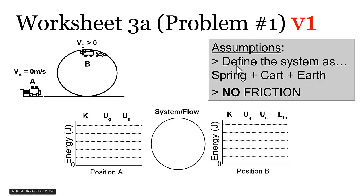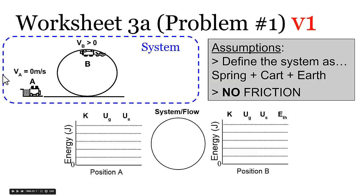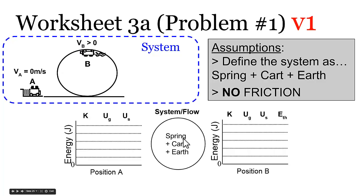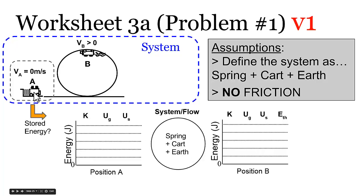The first thing we want to do is define our system — what things are we going to say store energy? Let's define the system as the spring, the cart, and the earth. Just like with free body diagrams, we put a dashed line around the things we care about. We're also not going to think about the effects of friction. We write the spring, cart, and earth in our circle, which represents everything inside the system that stores energy.